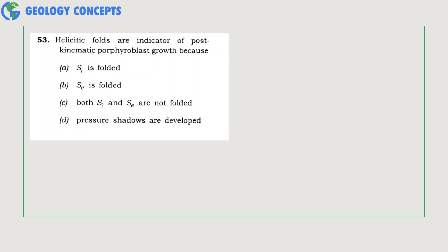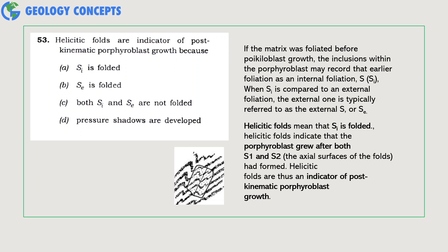Helicitic folds are indicators of post-kinematic porphyroblast growth because Si is folded, Se is folded, both Si and Se are not folded, or pressure shadows are developed. The symbols Si and Se represent internal and external foliation. If the matrix was foliated before porphyroblast growth, the inclusion within the porphyroblast may record that earlier foliation as an internal foliation, noted as Si. When Si is compared to an external foliation, the external one is typically referred to as Se. Helicitic folds mean that Si is folded—the internal foliation is folded—because helicitic folds indicate that the porphyroblast grew after both S1 and S2 had formed. Hence, option A is the correct answer.